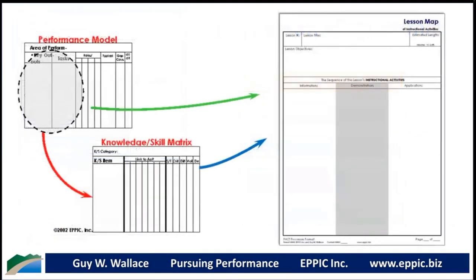So what data feeds lesson mapping? Where does the information come from that you put on this lesson map? It comes from two devices I've been using since I learned a derivative of the Gary Rummler approach to instructional analysis back in 1979. He called what I call the 'performance model' a 'performance table' — and that's used to systematically derive the knowledge and skills that enable that performance. Those two sets of data feed the construction of a lesson map.